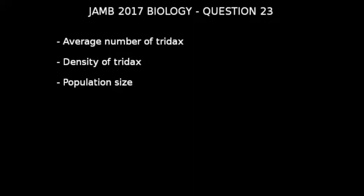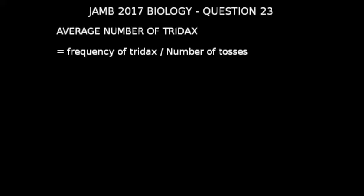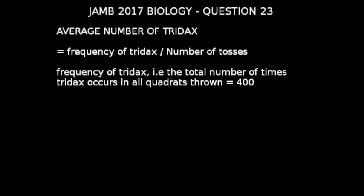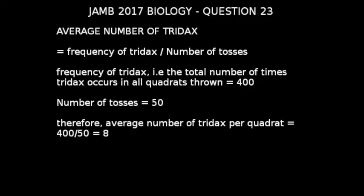Let's look at how to calculate the average number of tridas. The formula is: average number of tridas = frequency of tridas divided by number of tosses. From the values given, frequency of tridas (number of times tridas occurs in all quadrants) = 400, and number of tosses = 50. Therefore, average number of tridas per quadrant = 400 / 50 = 8.